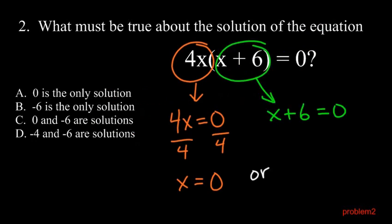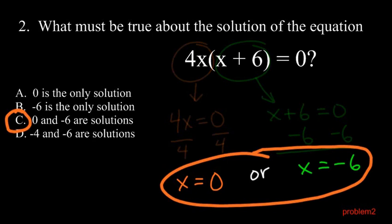Or, x plus six, the other thing, might equal zero. If you solve for x, you see that x equals negative six. So it turns out x could be either one of those, zero or negative six. And we say that both of them are solutions. So the correct answer is c.